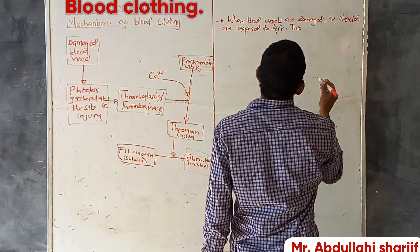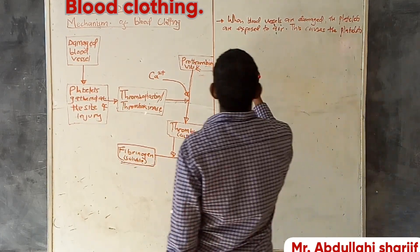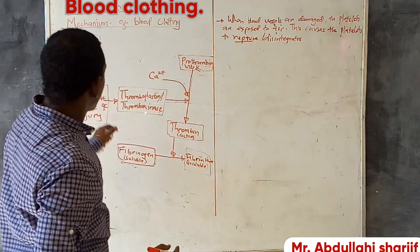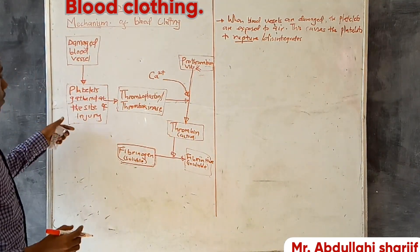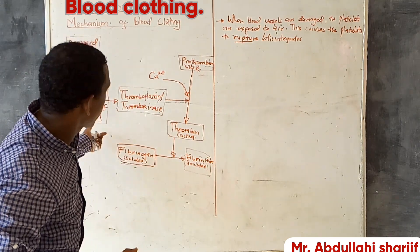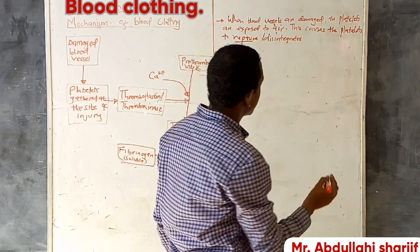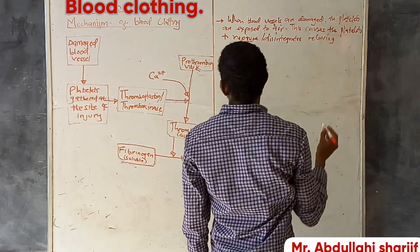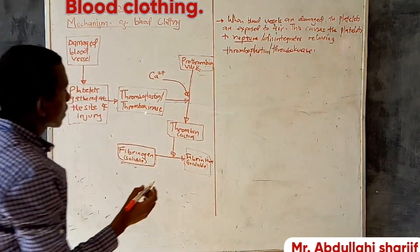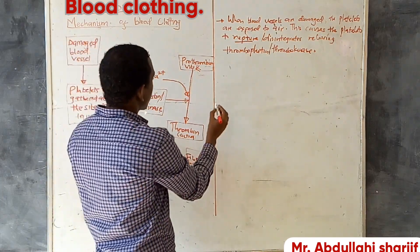When the platelets are exposed to air, this causes the platelets to rupture and disintegrate, releasing thrombokinase. So when the platelets are injured and exposed to air, they release thromboplastin or thrombokinase.